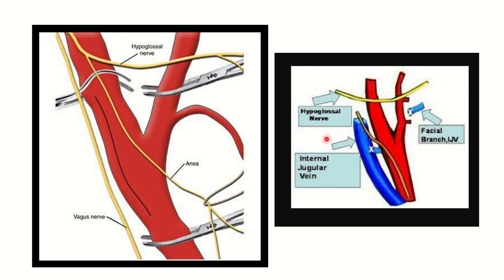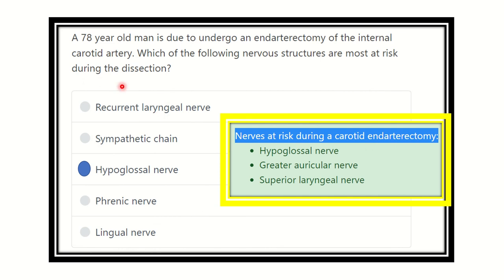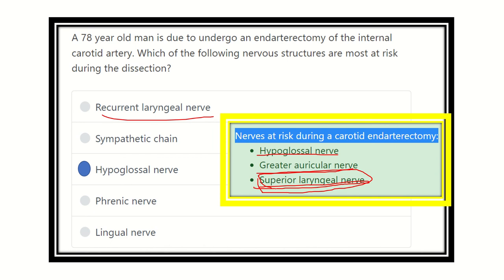In the second picture, we can see the vagus nerve and the glossopharyngeal nerve. The glossopharyngeal nerve, vagus nerve, and the greater auricular nerve may all get damaged during this procedure. Three important nerves may be damaged during the endarterectomy: the hypoglossal nerve, the greater auricular nerve, and the superior laryngeal nerve — not the recurrent laryngeal nerve, but the superior laryngeal nerve.